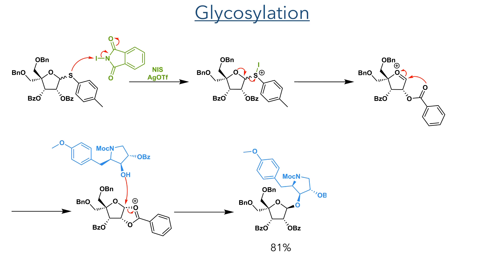With this fragment complete, it could then take part in a glycosylation reaction. This reaction used a ribosediol derivative with a thioglycoside donor group. This thioglycoside was activated with a mixture of NIS and silver triflate. Both of these activators can be attacked by the sulfur to produce a cation that is then eliminated, forming a positive charge that is stabilised by the lone pair on the pyran oxygen. This can undergo intramolecular attack from the ester group at the 2-position, forming an oxocarbenium ion with a five-membered ring that blocks the bottom face of the molecule, in a process known as anomerric assistance. This guides the stereoselectivity of the glycosylation reaction, forcing the nucleophilic alcohol to attack from the top face, forming the target glycoside in an 81% yield.